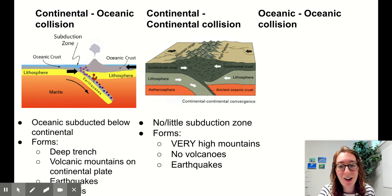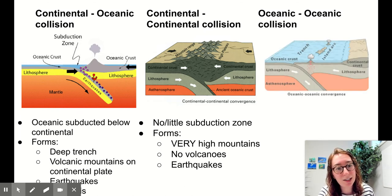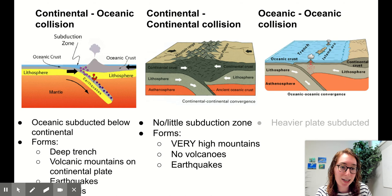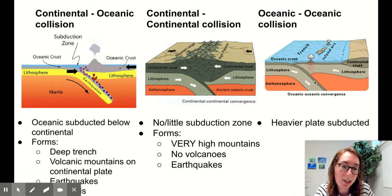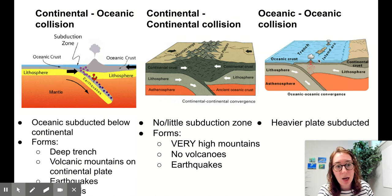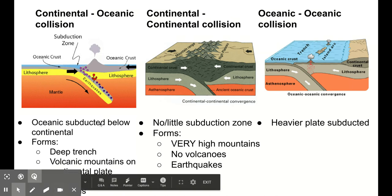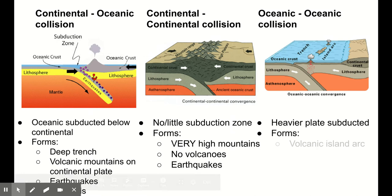Our last type of convergent boundaries are the oceanic-oceanic convergent boundaries. Here our heavier plate will be the one that's subducted. In this picture it appears to be the left one being subducted down, though it's not immediately obvious which one is the denser one.